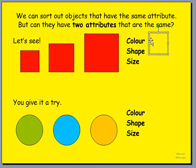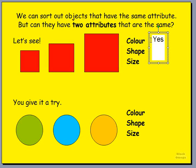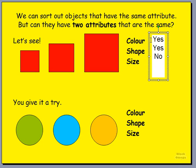Let's have a look. Is the color the same? Yes, it is — they are all red. Next, is the shape the same? Yes, they are — they are all squares. And finally, the size. Are the sizes the same? No, they are not. They are not the same, but the color and the shape are.